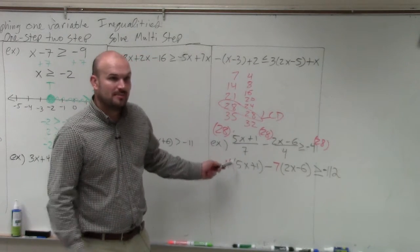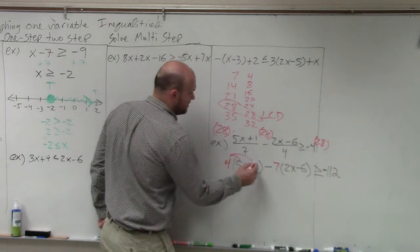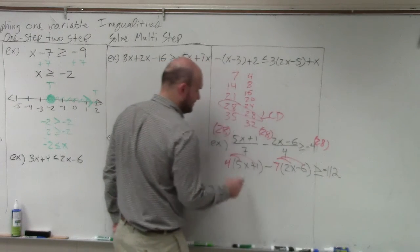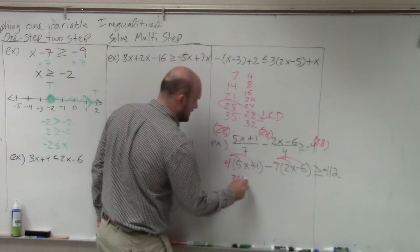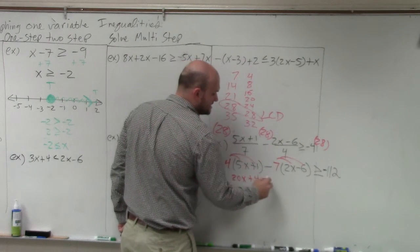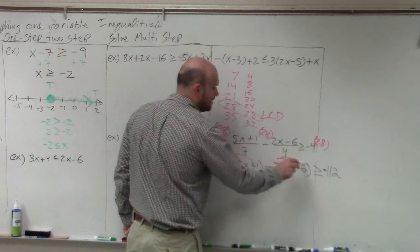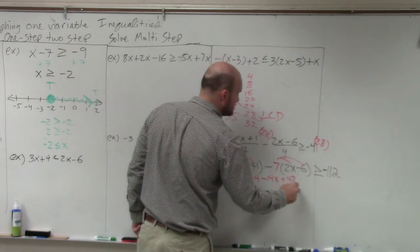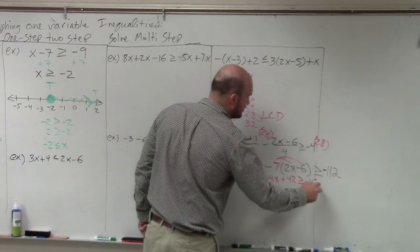Now we apply the distributive property. Multiply, multiply, multiply, multiply. So therefore, we get 20x plus 4. Make sure this is a negative 7. So that's a negative 14x. That's going to be plus 42 is greater than or equal to negative 112.